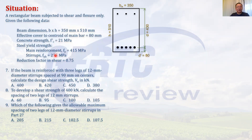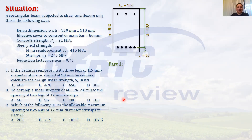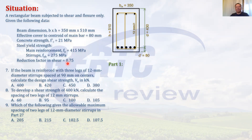fy and fc prime are given. The reduction factor φ for shear is 0.75 — we are using the 2010 code. If the beam is reinforced with three legs of 12 mm diameter stirrups spaced at 90 mm on centers, calculate the design shear strength Vu. So Vu = φVn, and we need to compute the nominal strength Vn.